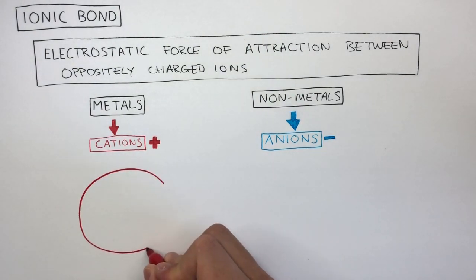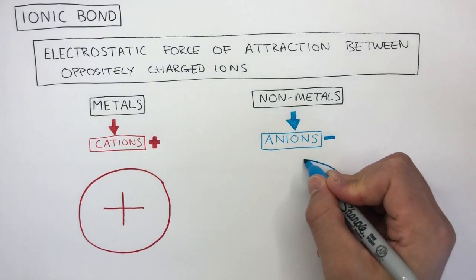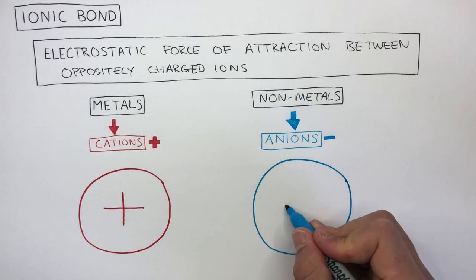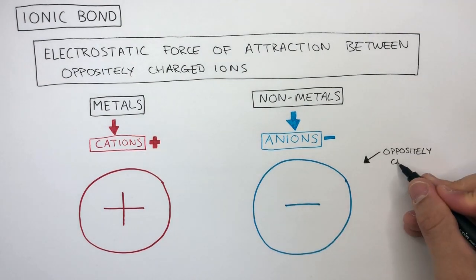So this represents a cation, which is a positively charged ion. And this represents an anion, which is a negatively charged ion. And these are oppositely charged ions.